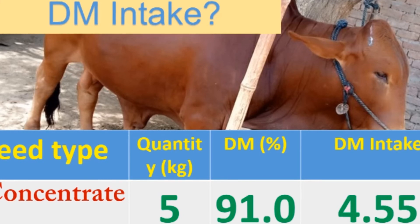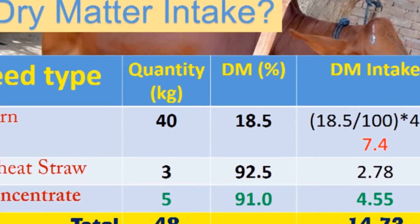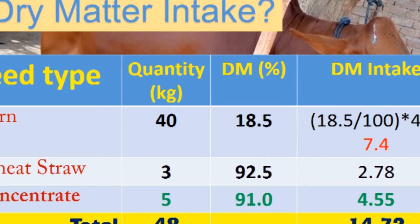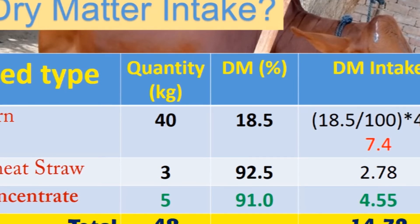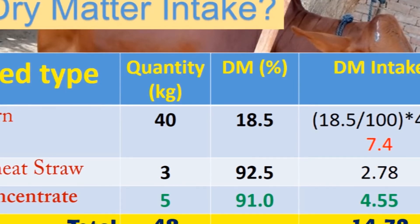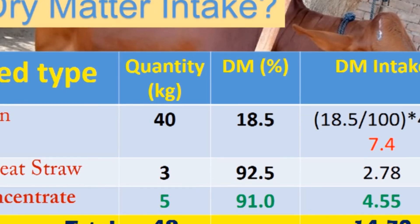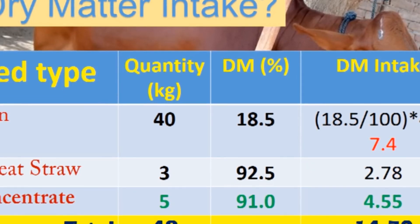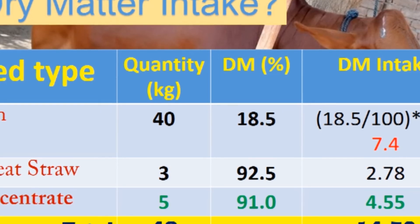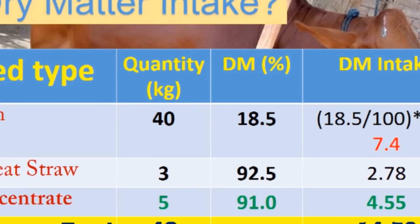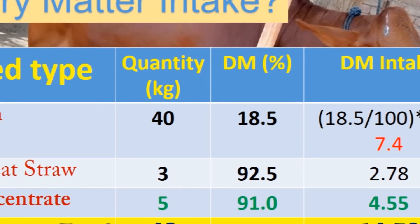Here is the complete summary table of all calculations. On a fresh matter basis: corn fodder 40 kg, wheat straw 3 kg, concentrate 5 kg — total 48 kg. After applying their respective dry matter contents, this animal is consuming 14.73 kg of dry matter in total, fulfilling the dry matter intake requirement for a 500 kg buffalo.